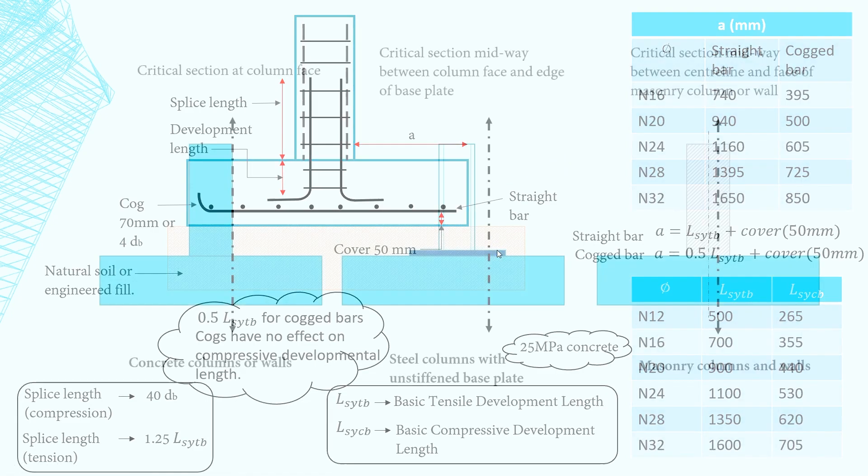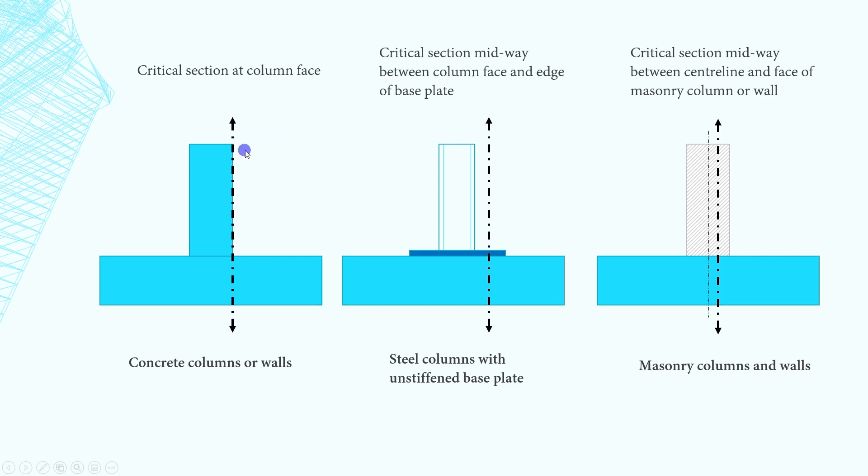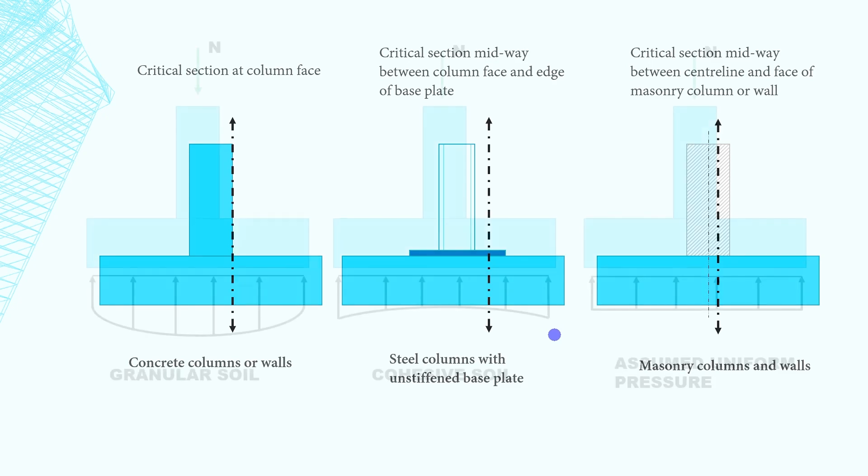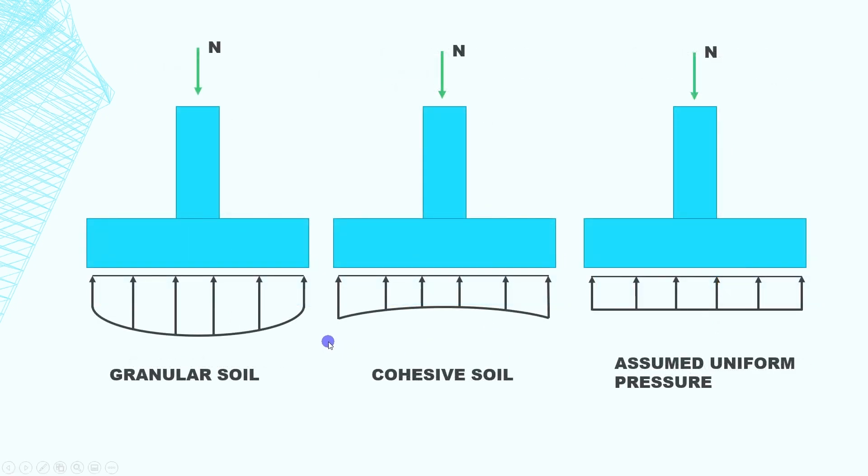Remember in the first slide that I said the maximum bending moment is at the face of the column? So I lied. I'm joking, but the position of the critical section for the maximum bending moment will vary according to the type of column or wall. For example, the critical section for a steel column is midway between column face and edge of the base plate. For masonry walls or columns it is midway between the center line and the face of the masonry wall or column. So when you're calculating the bending moment you take the distance to the critical section.